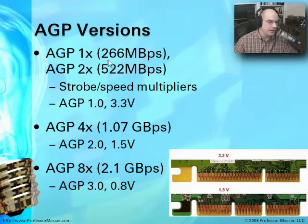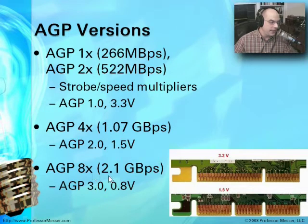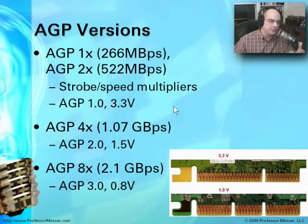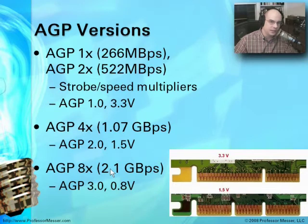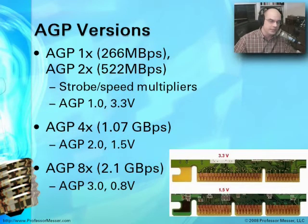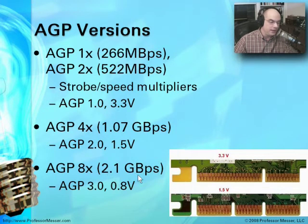AGP 1X goes from 266 megabytes per second, and 8X speeds go up to 2.1 gigabytes per second. These are speed multipliers — sometimes called strobe multipliers — where the card works between CPU cycles to run two, four, or eight times as fast as the normal clock cycle of that bus. The AGP card has its own memory and processors on board. These video cards are very smart, which allows much faster throughput and higher bandwidths out of those devices.